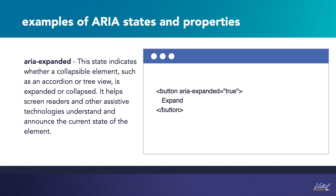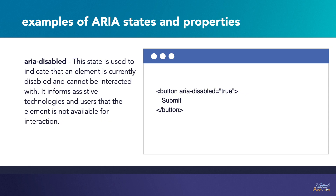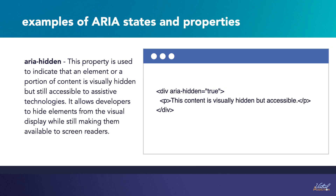Here are a few examples of ARIA states and properties. The aria-expanded state indicates whether a collapsed element, such as an accordion or tree view, is expanded or collapsed, helping screen readers understand and announce the current state. The aria-selected state indicates the selection status of an element, such as a tab or list item. The aria-disabled state indicates that an element is currently disabled and cannot be interacted with. The aria-hidden property indicates that an element is visually hidden but still accessible to assistive technologies.